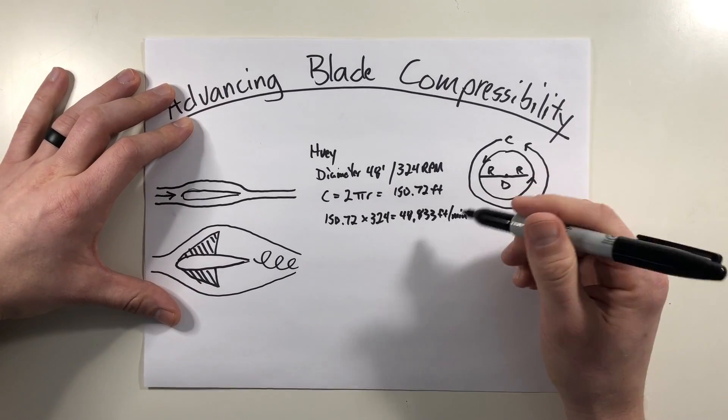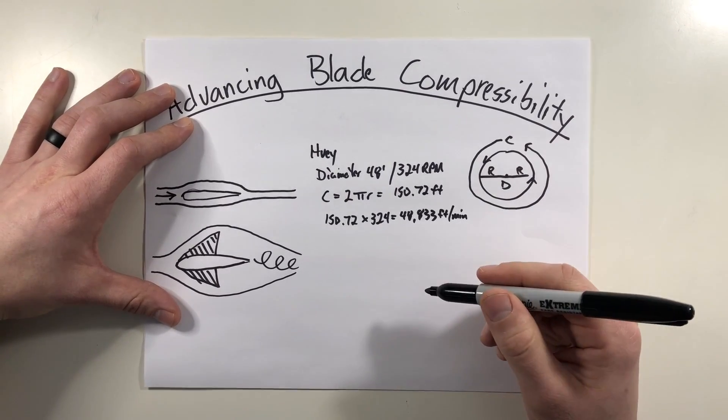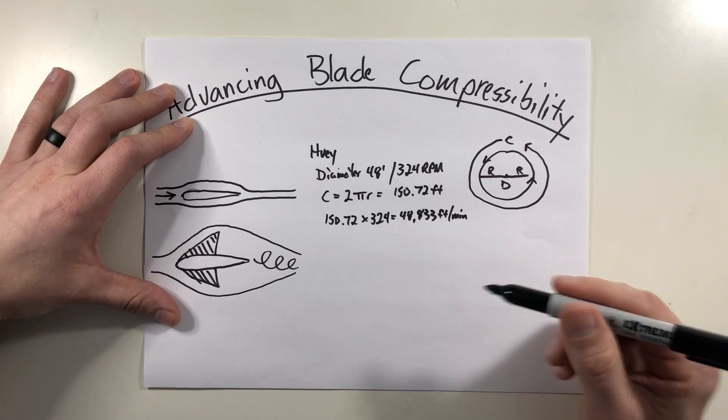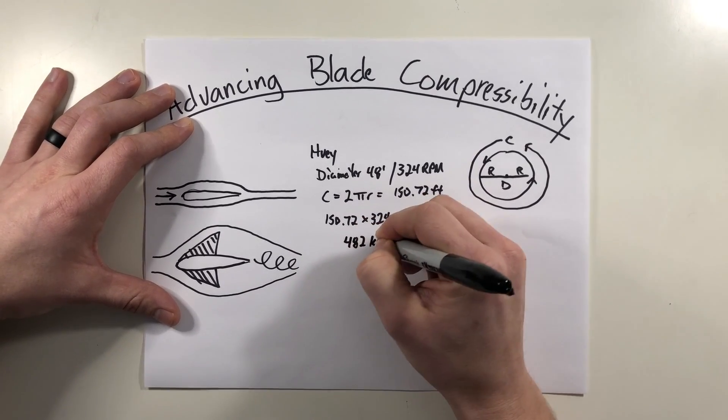Now from here, I convert it to miles per hour, kilometers per hour, knots, whatever speed you want to use. But for simplicity, I'll just go ahead and convert this over to knots. And this comes out to 482 knots.